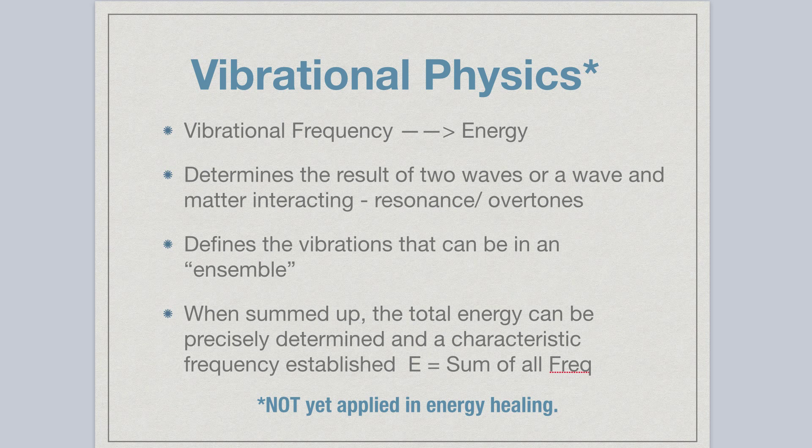And we also look at the rules of resonance and overtones, because it has a big effect on how we store certain energies in our bodies, such as emotions. And vibrational physics defines all the vibrations that can be in an ensemble. We don't have just a single vibration, because we're composed of so many different kinds of atoms and so many different kinds of bonds. We have a whole array of vibrations.